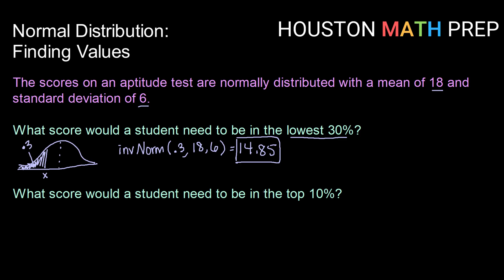Okay, answering another, what score would a student need to be in the top 10%? So again, starting by drawing a picture of our normal distribution. Here's that median and mean that would give us a 50%. So top 10% is probably somewhere up here.